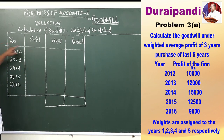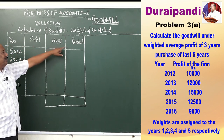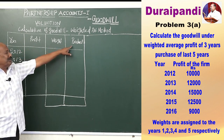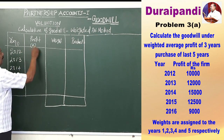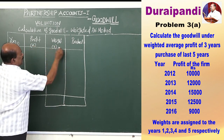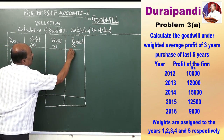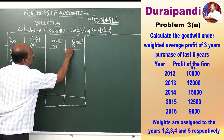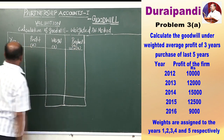The table has four columns: the first one is year, the second one is profit, the third one is weight, and the fourth one is product — which is arrived at by multiplying the second column and the third column.